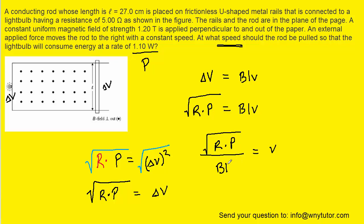And so at this point, we can simply plug in the known values. The length was given to us in centimeters, so we'll have to make sure to convert that into meters. The resistance is given in the standard unit of 5 ohms. The magnetic field is also given in a standard unit of 1.2 tesla. And then we have the power in the standard unit of watts.